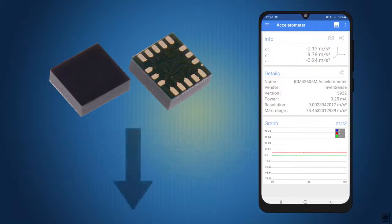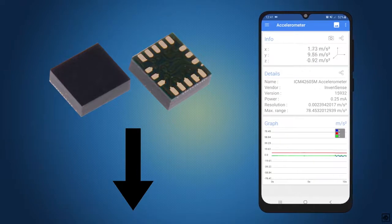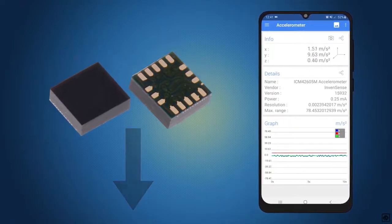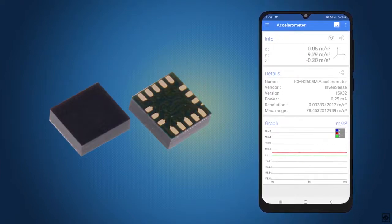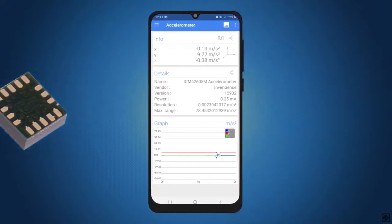Such forces may be static, like the continuous force of gravity or, as is the case with many mobile devices, dynamic to sense movement or vibrations. The accelerometers detect acceleration over the X, Y, and Z axis. Now if you move it in any direction, it will detect changes on the axis.